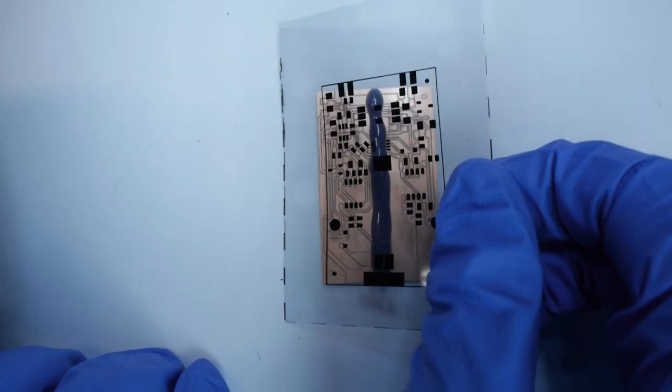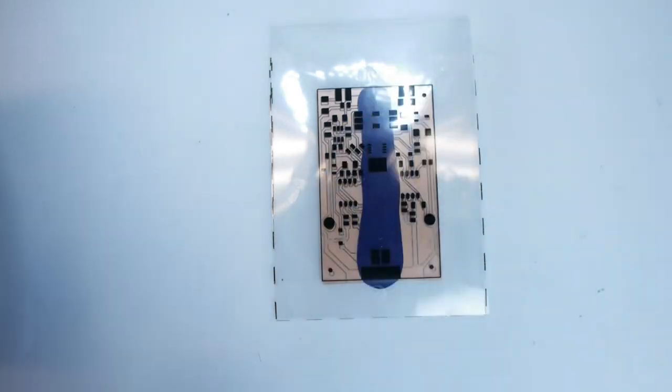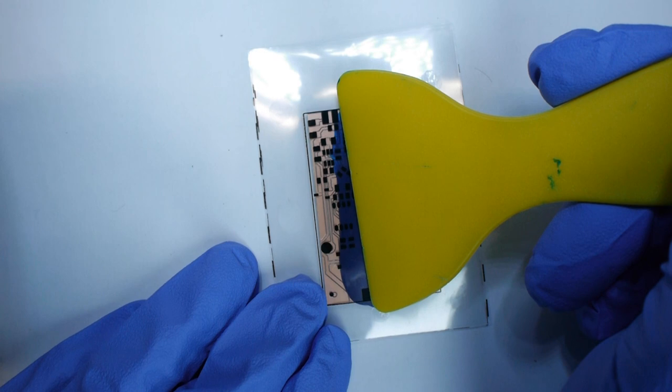Place your transparency film right over the board and make sure that your blackout parts align with the pads. Press firmly with this spreader. Spread it against the edges like so.